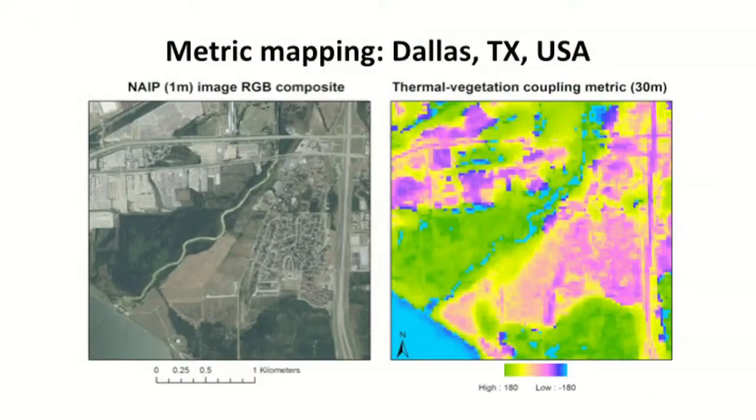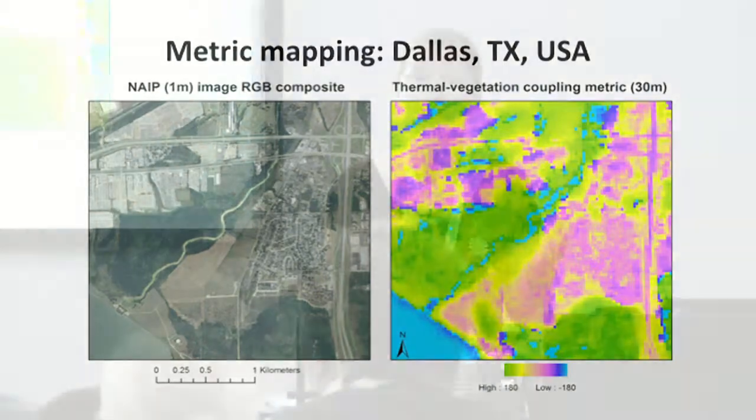This is an example for Dallas, Texas. This angle metric shows different values for different land cover and land use types and helps us separate them. More importantly, it also shows how some urban cover types that we think of as one class, like low-density residential, are actually really heterogeneous physically. That is important if we use land cover maps as inputs to physical models.